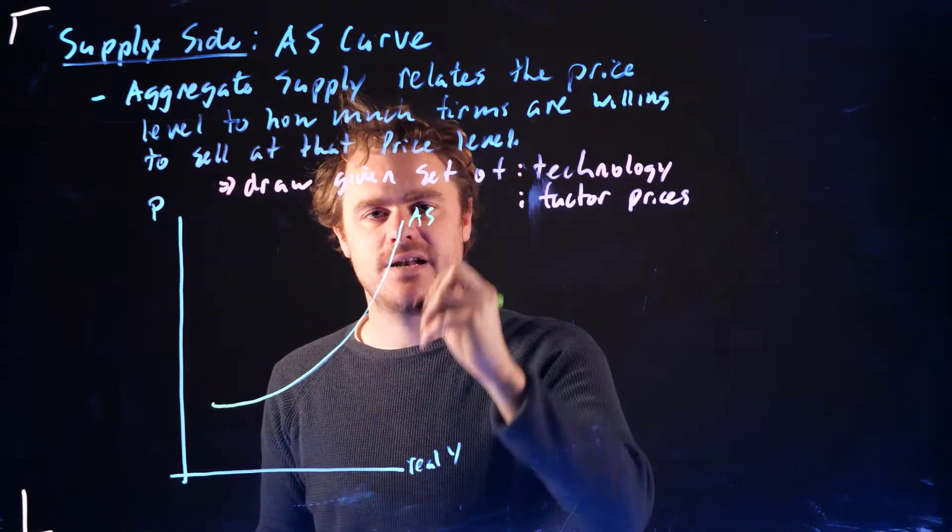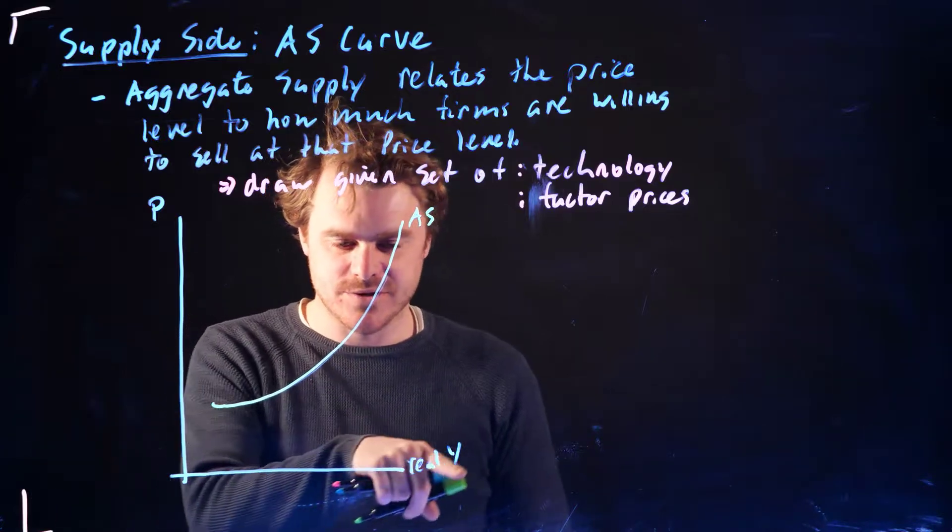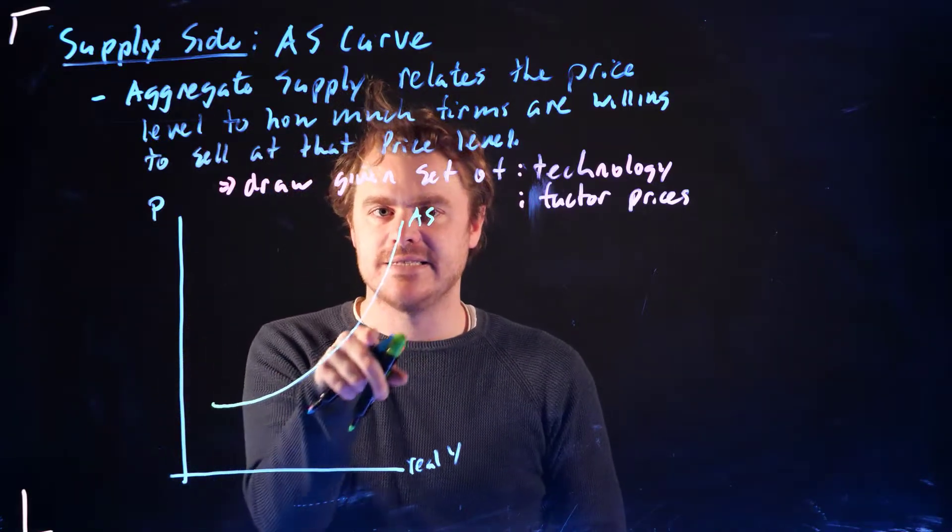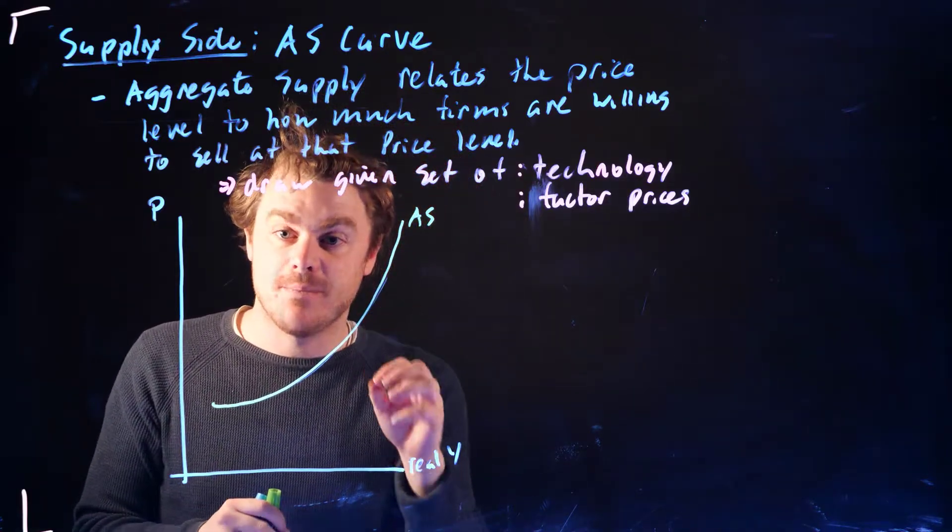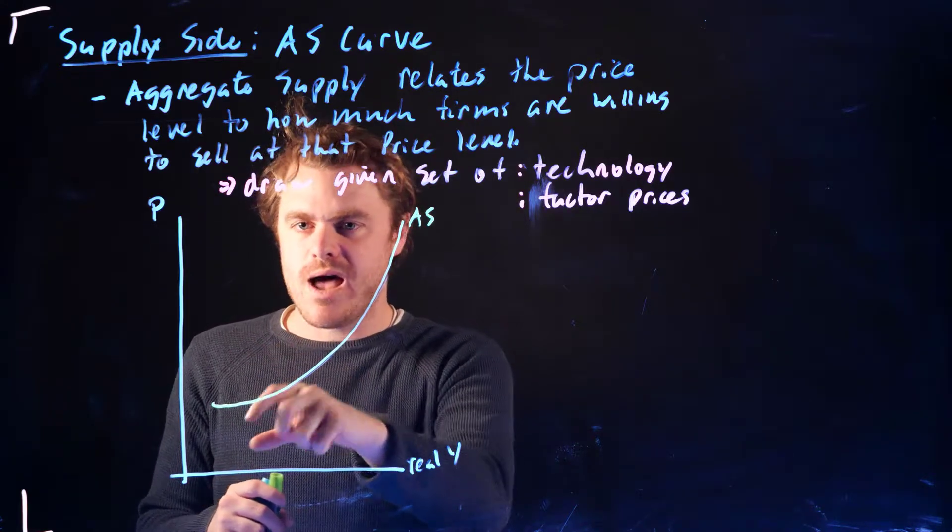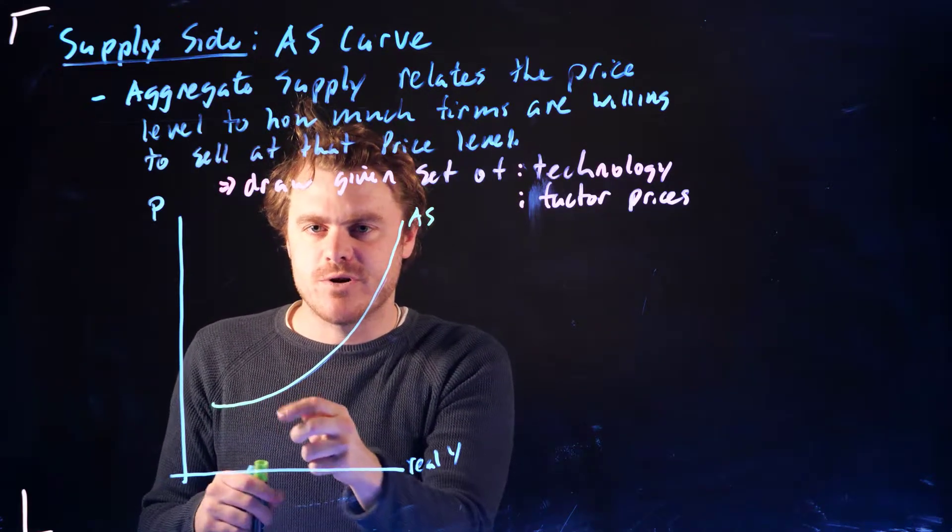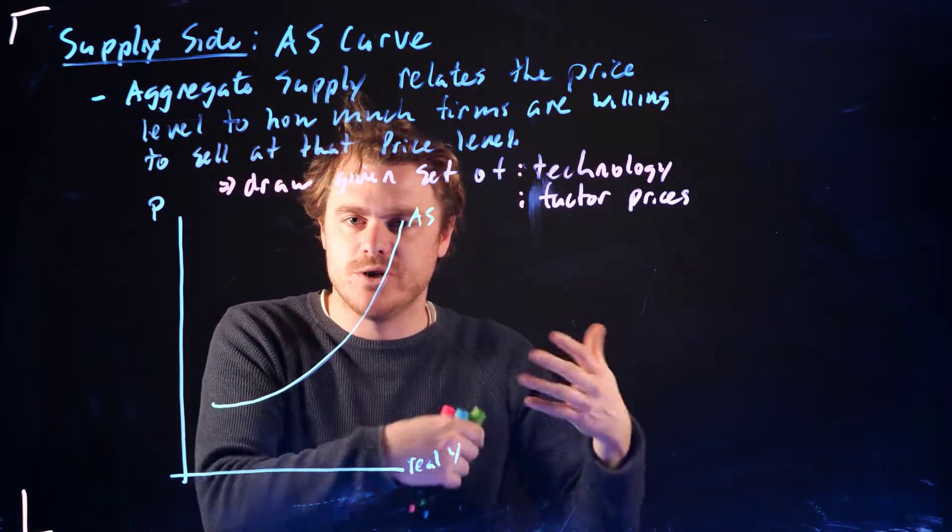And notice that I draw the curve relatively flat with low levels of real GDP, but then it gets steeper and steeper as real GDP goes up. And that is on purpose. We're going to have with low levels of real Y, firms can increase how much they produce and the prices don't have to go up that high to produce more.